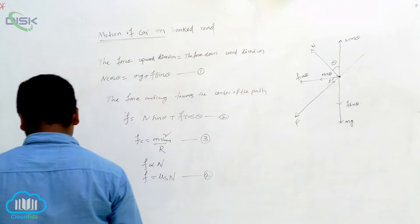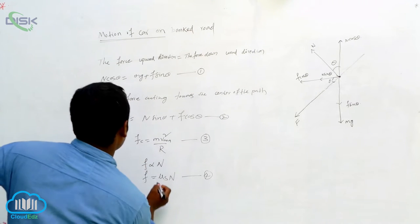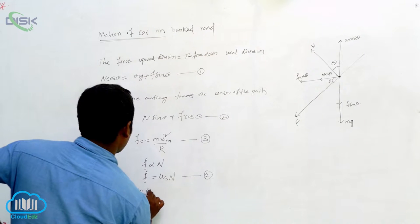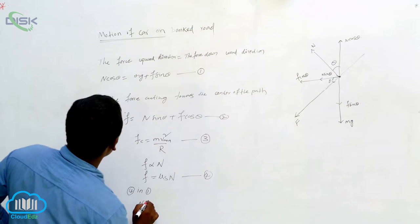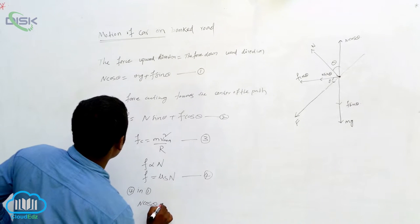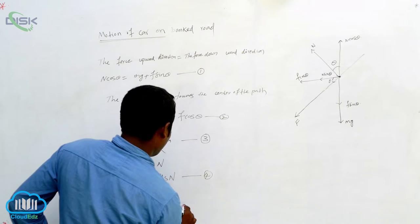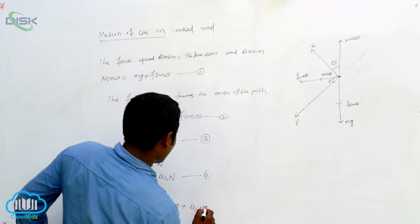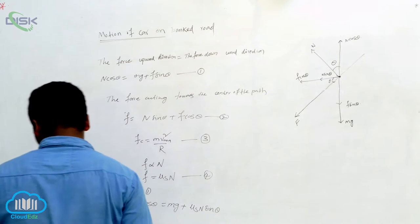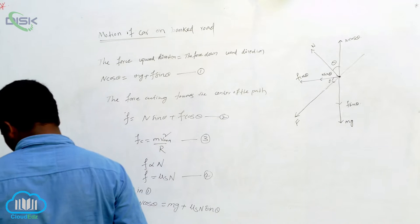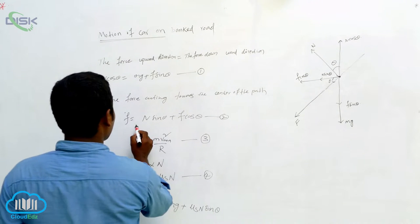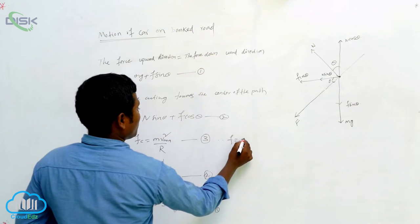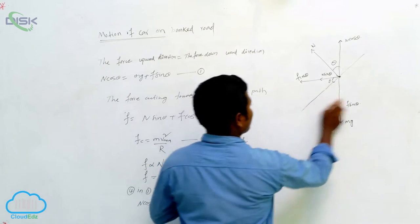Substituting equation four into equation one: N cos theta is equal to mg plus mu-s N sin theta. If we take f equal to Fc, then we proceed from this equation. From this substitution we can simplify the expression.